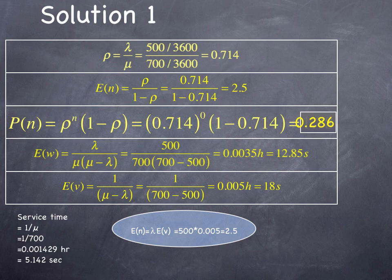The delay of the vehicle, which is the expected wait time plus the service time, is 1 over 700 minus 500, which is 18 seconds. The service time is 1 over the service rate,